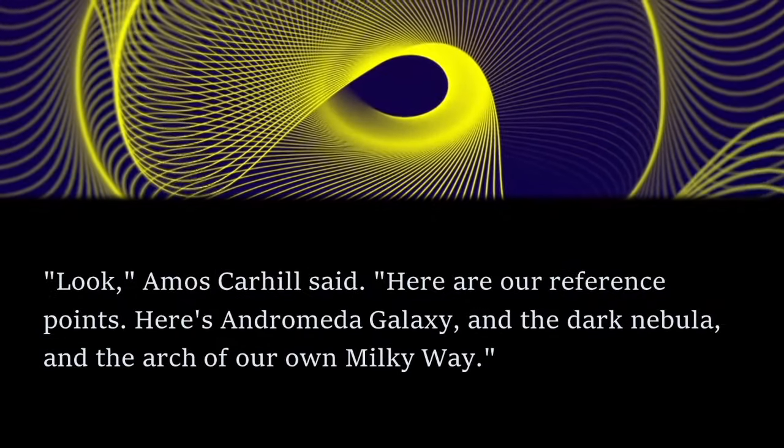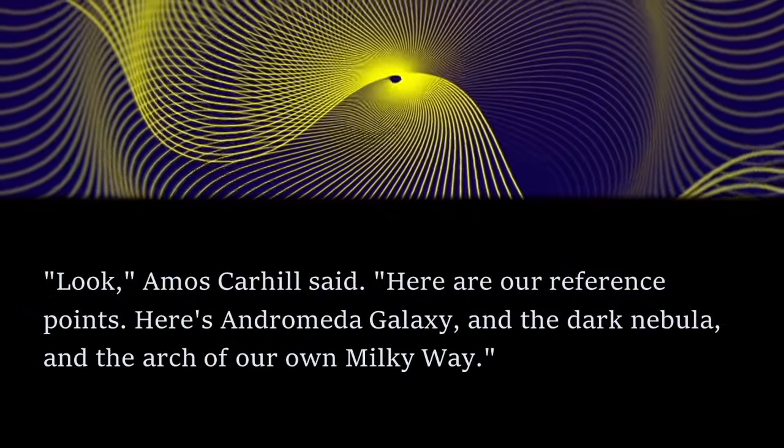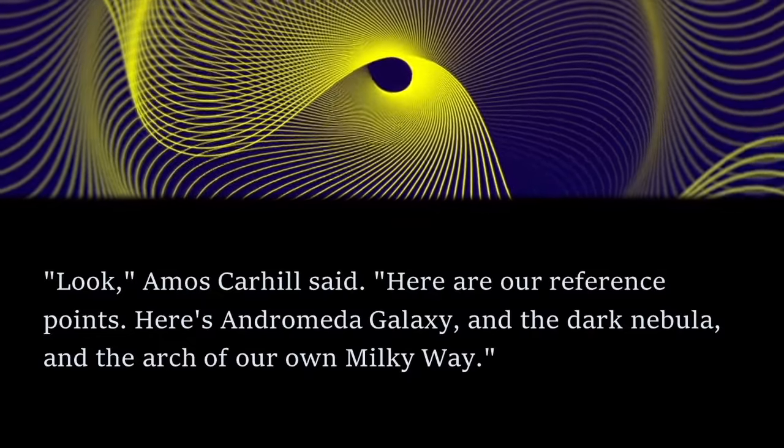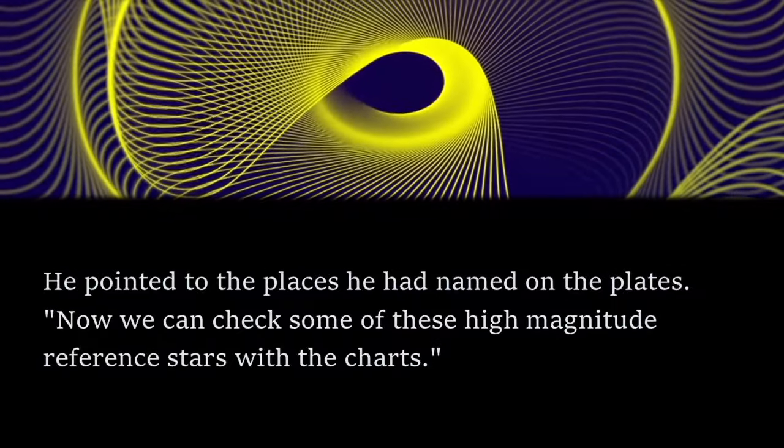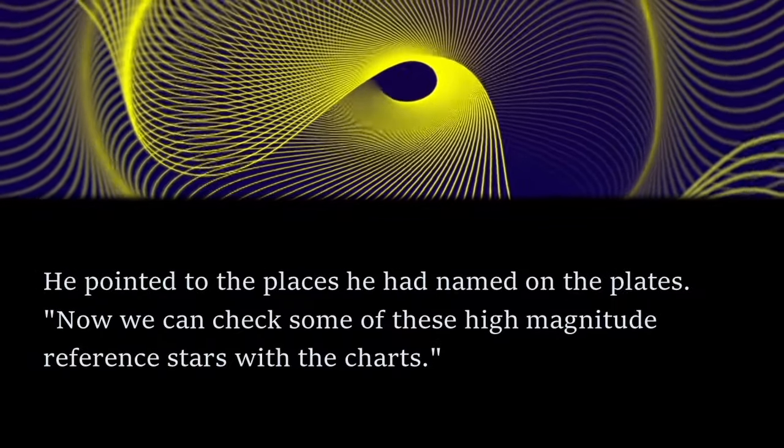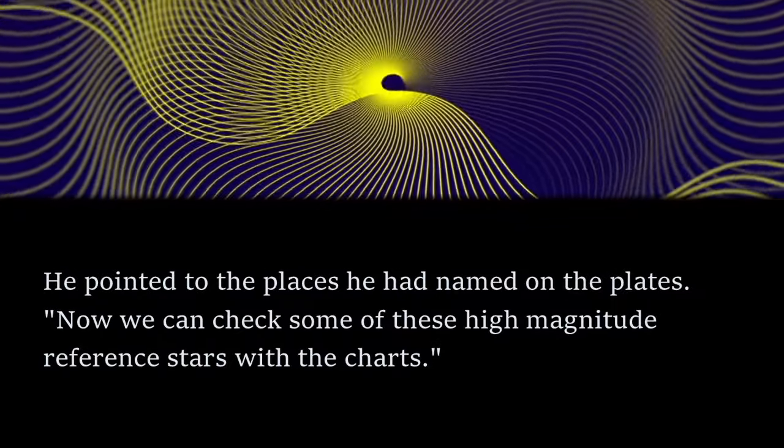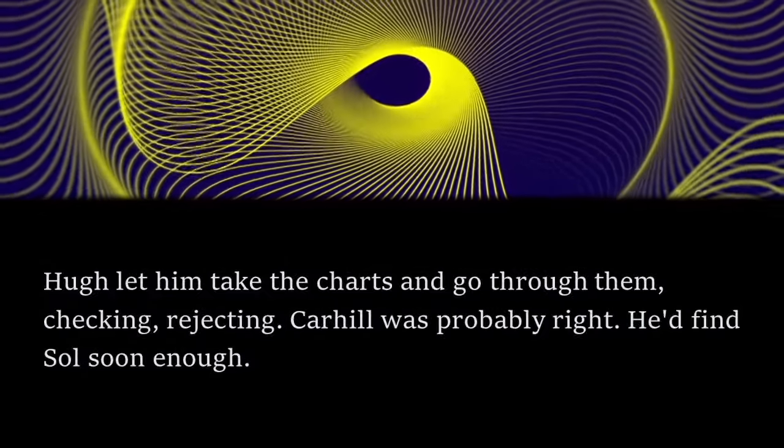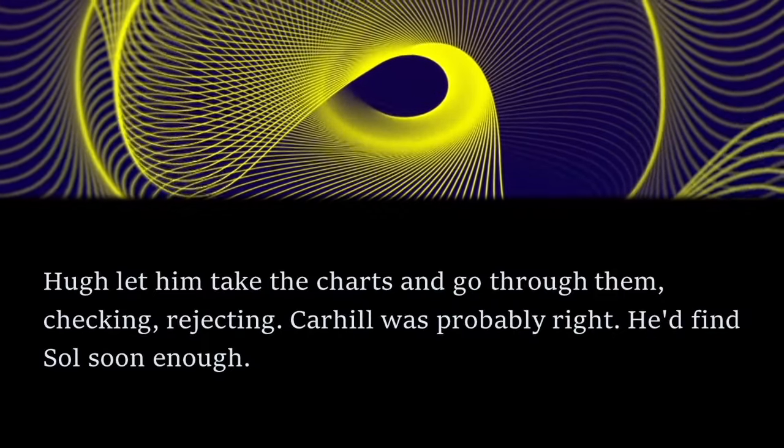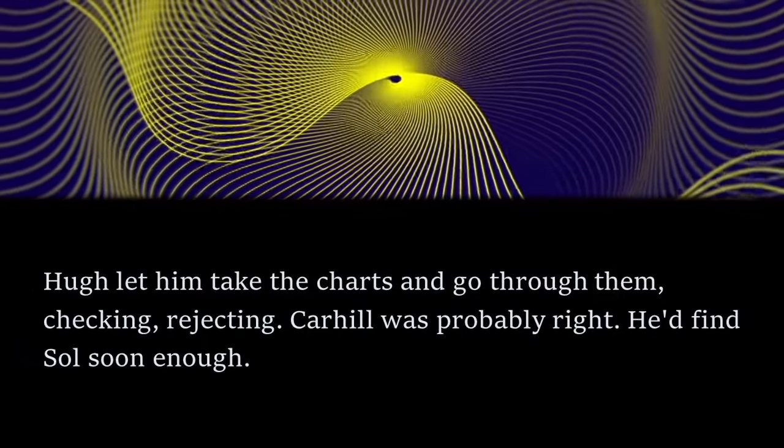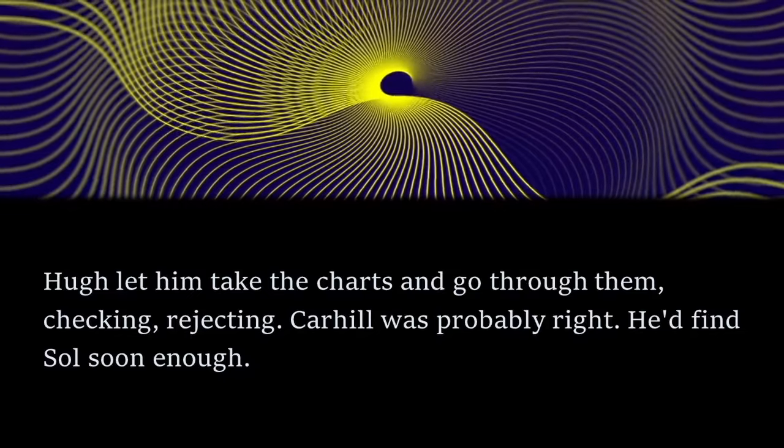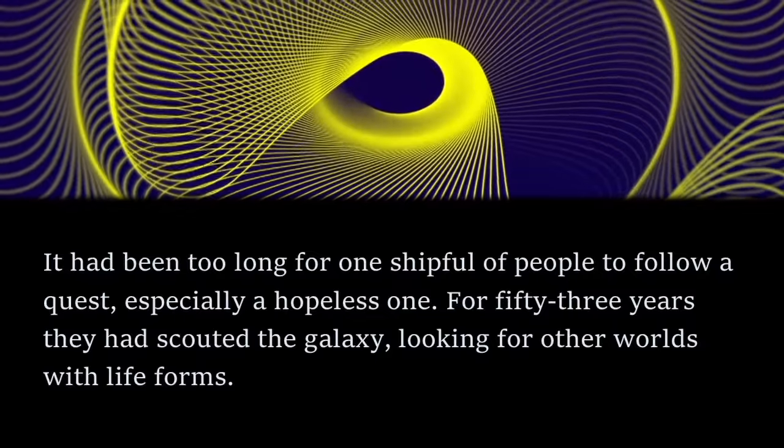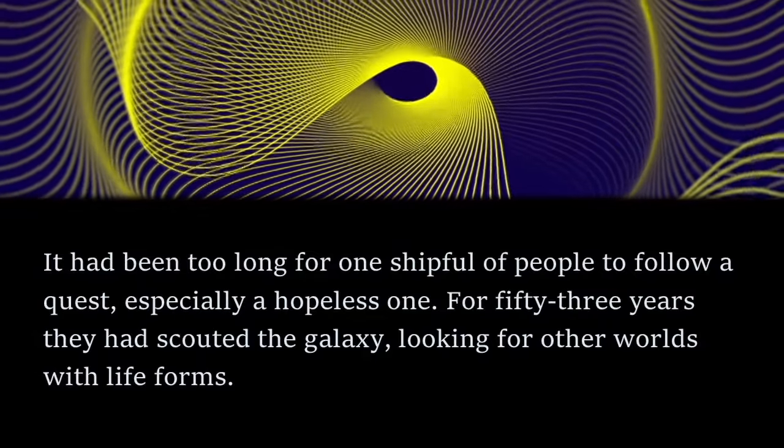Look, Amos Carhill said. Here are our reference points. Here's Andromeda Galaxy and the Dark Nebula and the Arch of Our Own Milky Way. He pointed to the places he had named on the plates. Now we can check some of these high-magnitude reference stars with the charts. Hugh let him take the charts and go through them, checking, rejecting. Carhill was probably right. He'd find Sol soon enough.